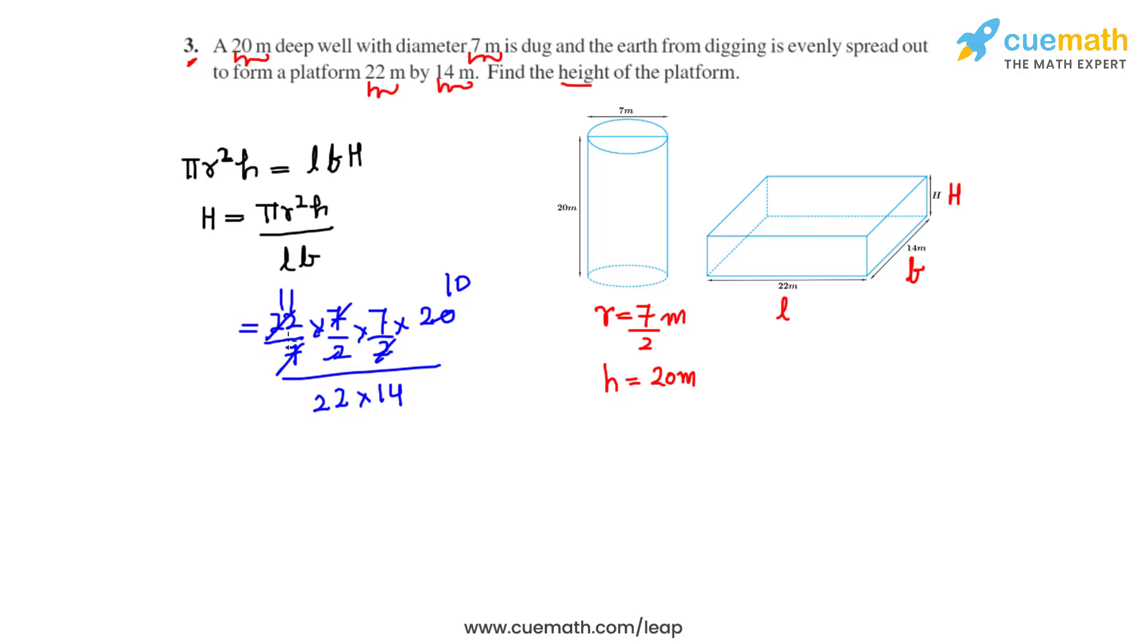And finally we get the answer as 5 by 2 meters, which equals 2.5 meters. So the height of the flat platform will be equal to 2.5 meters.